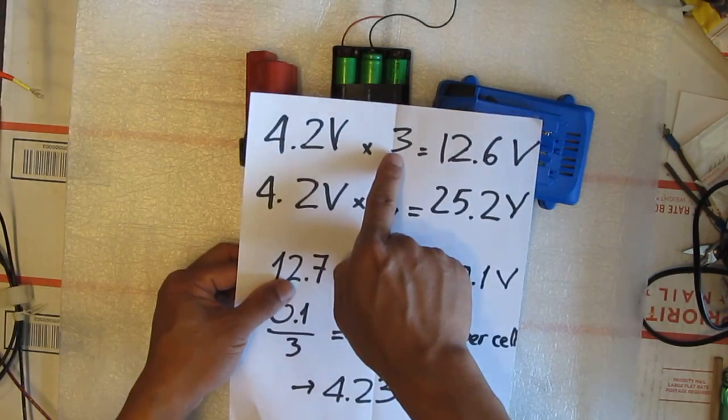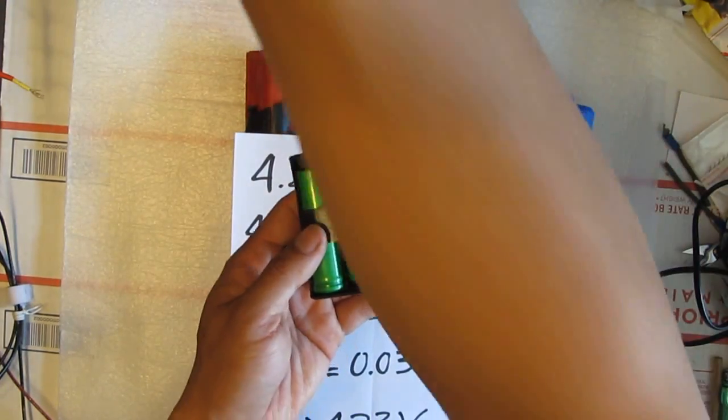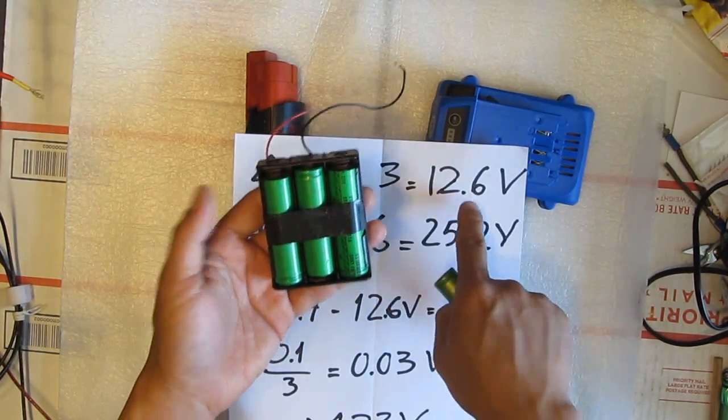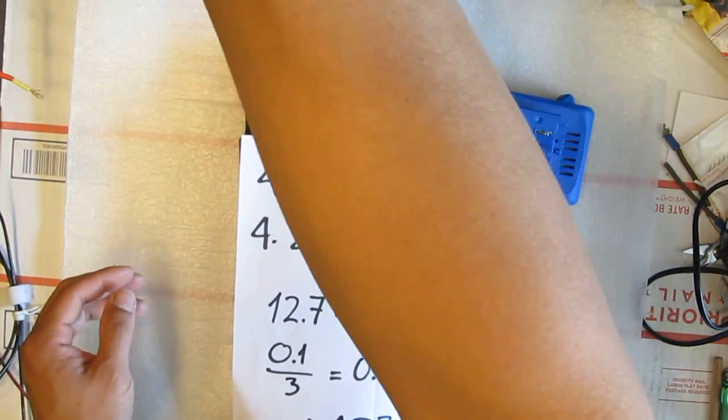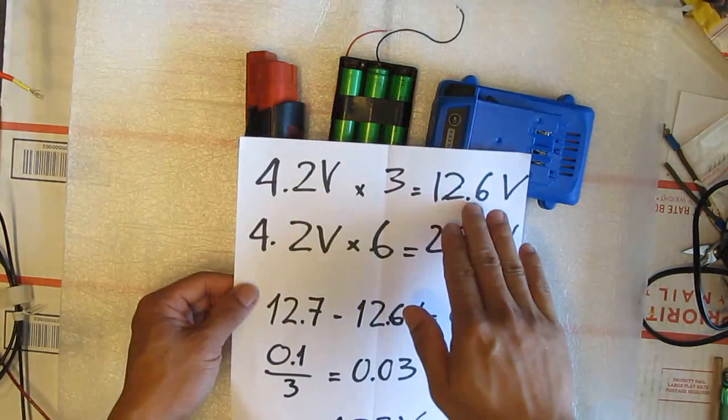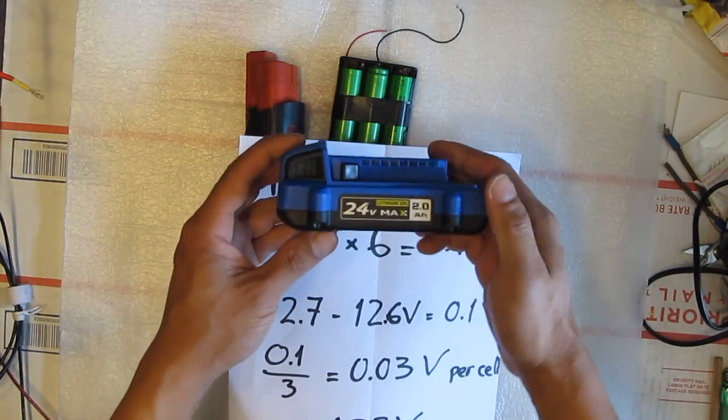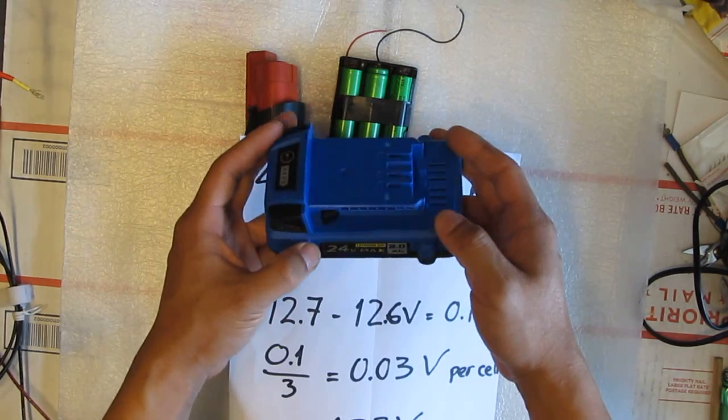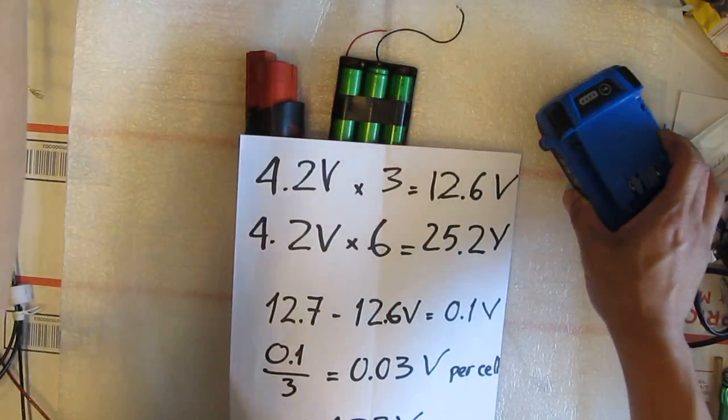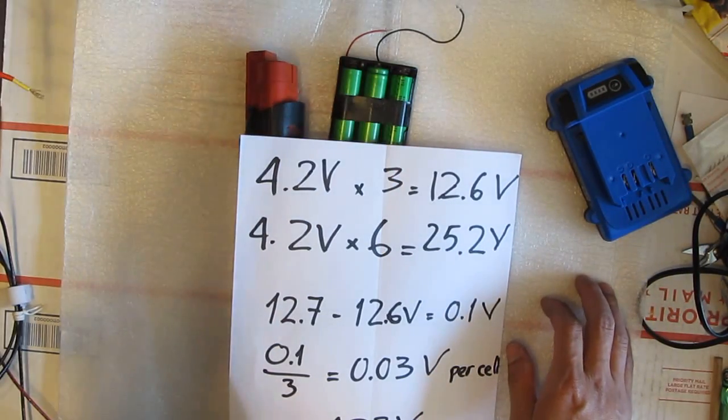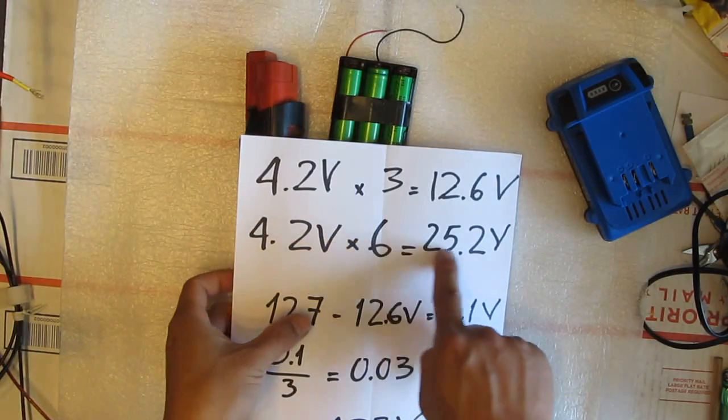So with a three cell lithium-ion battery like this one here, these are just three of these together to produce 12.6 volts. So each of these maximum at 4.2 volts. So you got three of these produce 12.6 volts or if you have six of these. So this is the Cobalt 24 volt cordless tool battery. Inside here there are six of these 18650 cells and six of these cells will produce 25.2 volts.